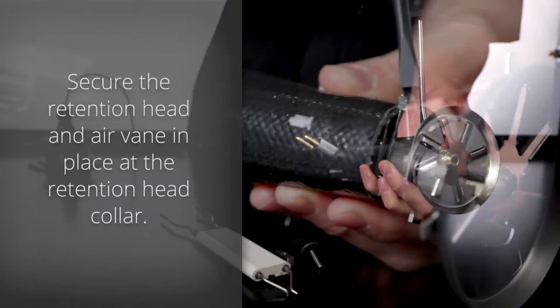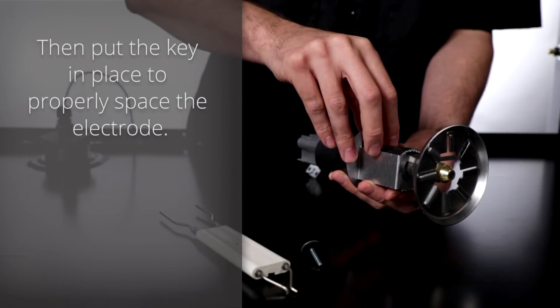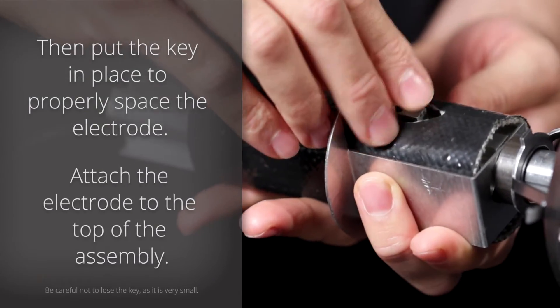Secure the retention head and air vane in place at the retention head collar. Then put the key in place to properly space the electrode and attach the electrode to the top of the assembly.